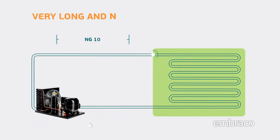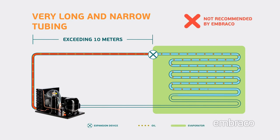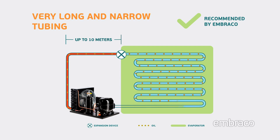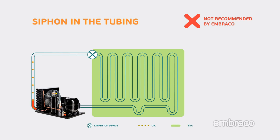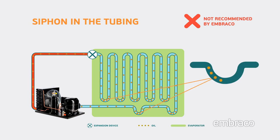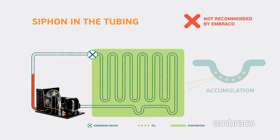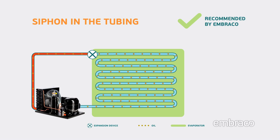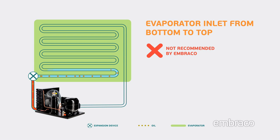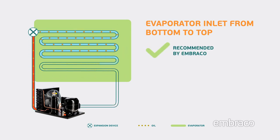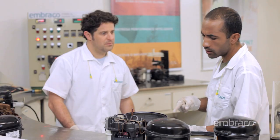What would these sizing problems be? Very long and narrow tubing. Siphon in the tubing. Evaporator inlet from bottom to top. And if the compressor is operating with a lower than ideal oil charge, will it present problems? Yes. When the compressor operates with an oil charge lower than specified, there will be increased wear, which can reduce the useful life of the compressor and could create a locked rotor situation.